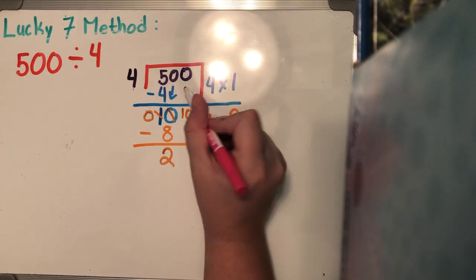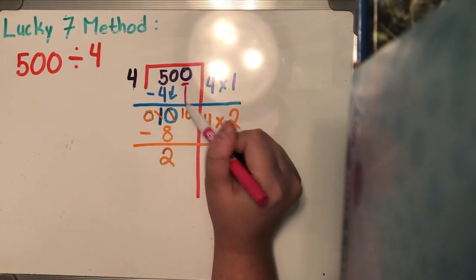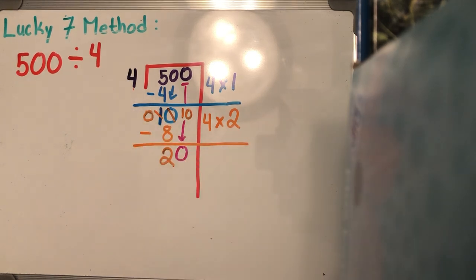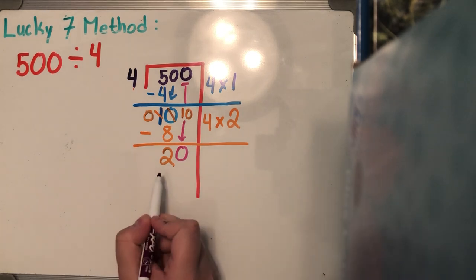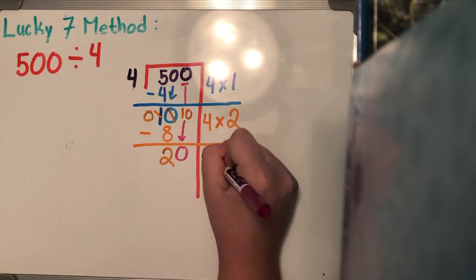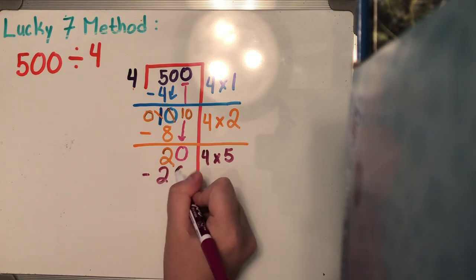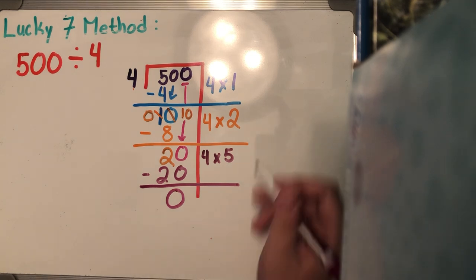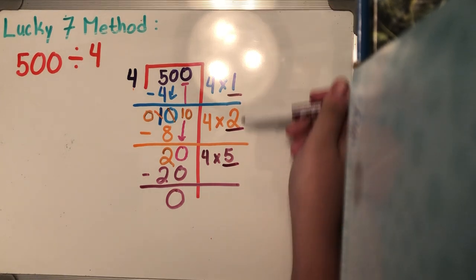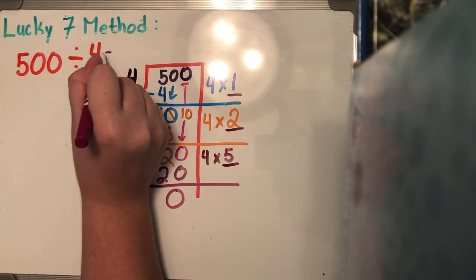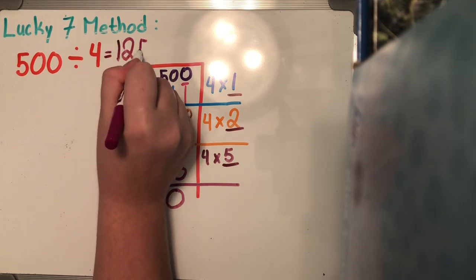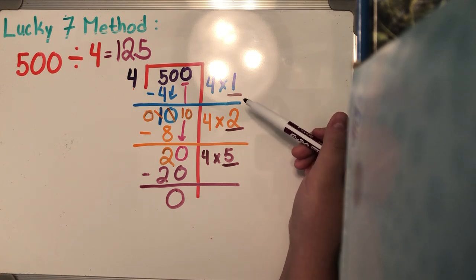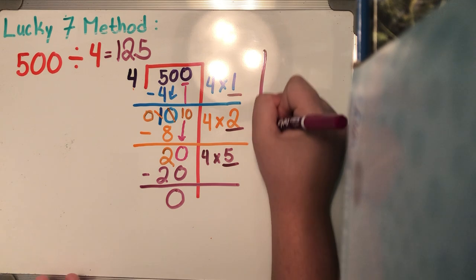I'm not done because I still have this leftover zero to bring down to the party. So I'm going to bring him all the way down — he wants to talk to our new guest, number four. So that number, which was two, now becomes 20. How many times can four go into 20 without going over? This is a nice one because four times five is 20, so I'm going to subtract 20 from 20 and get zero. There is no remainder in this problem. Reading all the numbers top to bottom, 500 divided by four gives a quotient of 125. Don't try reading it bottom to top.